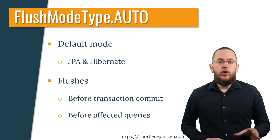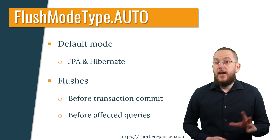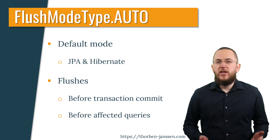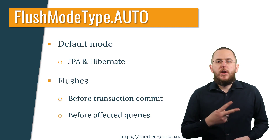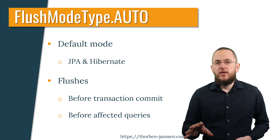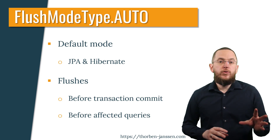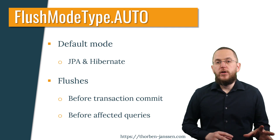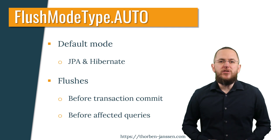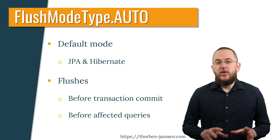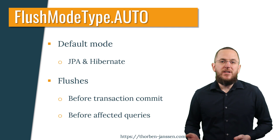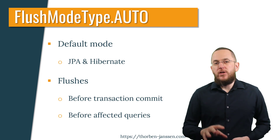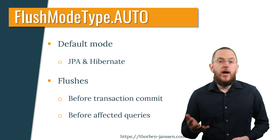The flush mode type Auto is supported by the JPA specification and Hibernate — JPA defines it as the default flush mode. It flushes the persistence context in 2 situations: before the transaction gets committed, and before executing a query that uses any database table for which your persistence context contains any pending changes. Flushing the persistence context before the transaction gets committed should be obvious and not require any deeper explanation. But the second situation is a little more complex and requires you to know how Hibernate determines which database tables a query affects.